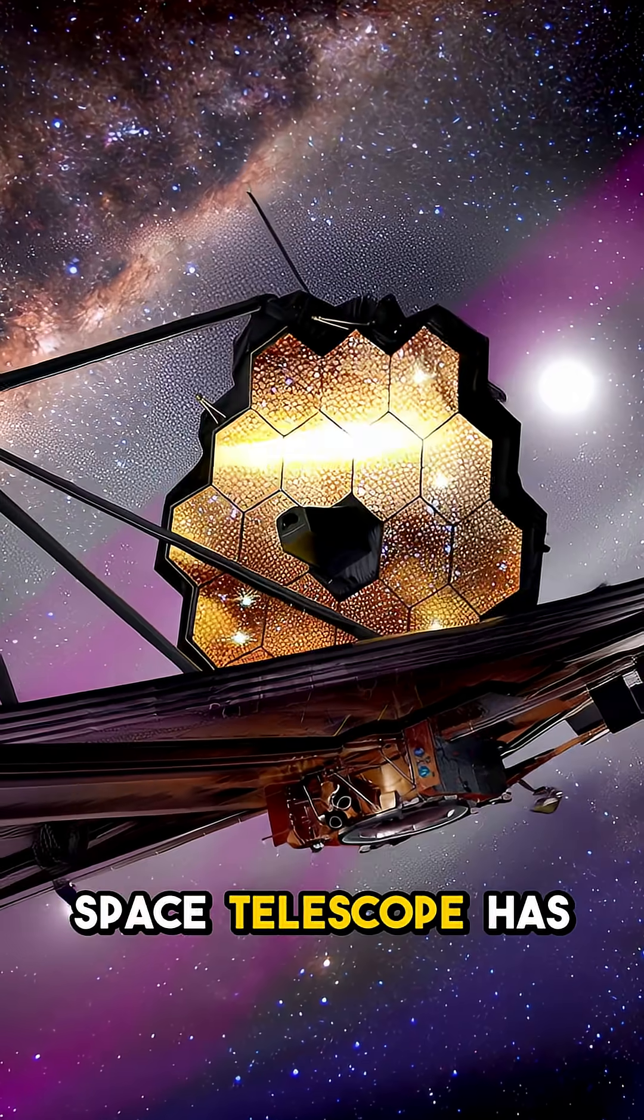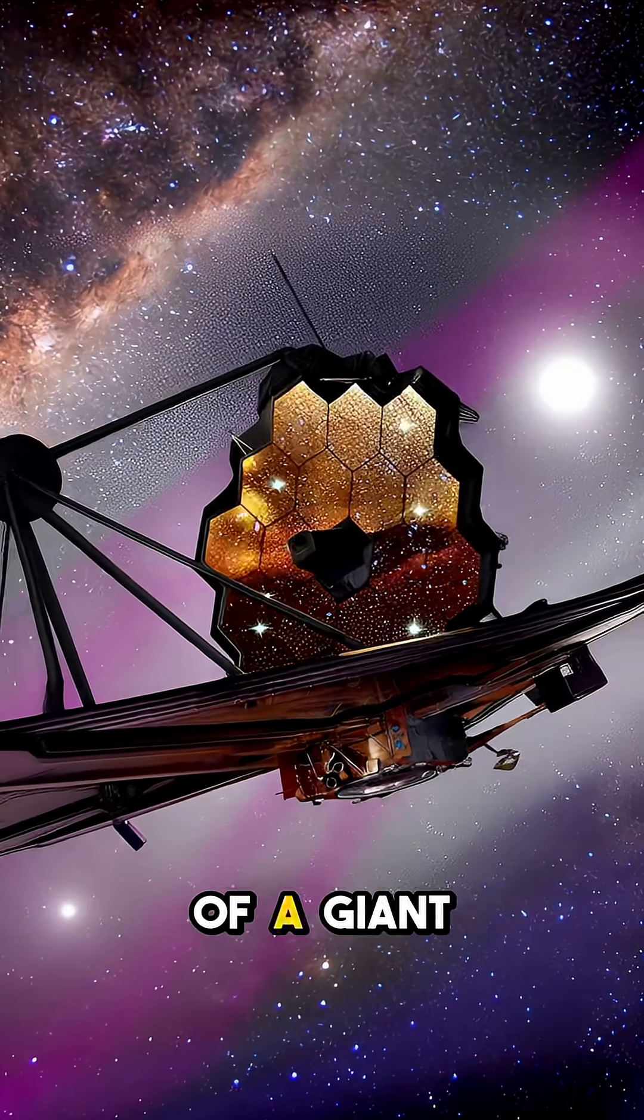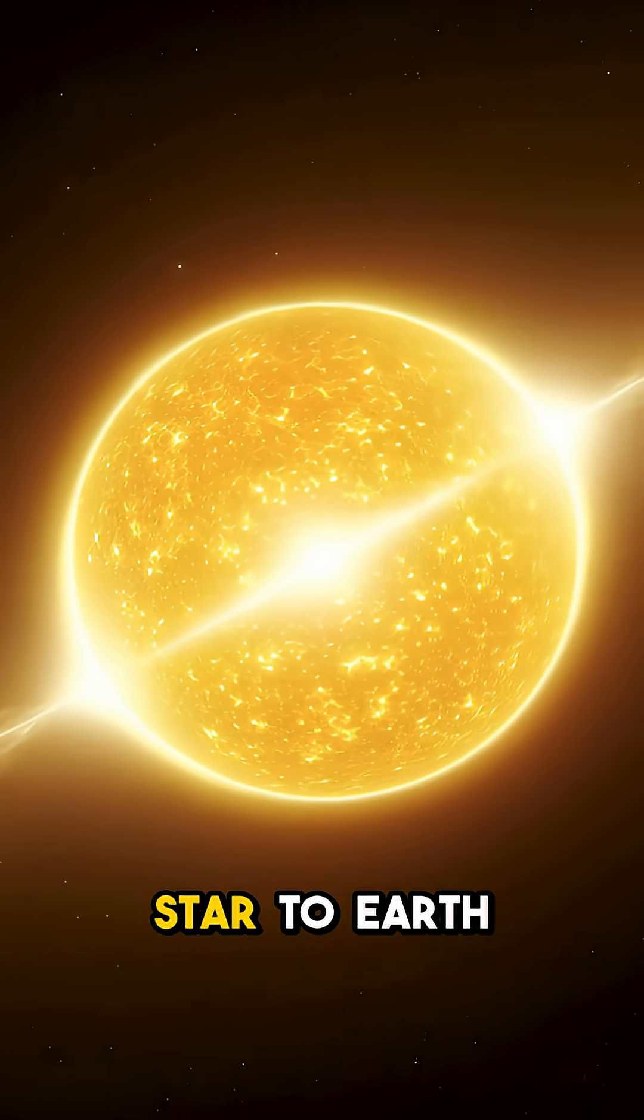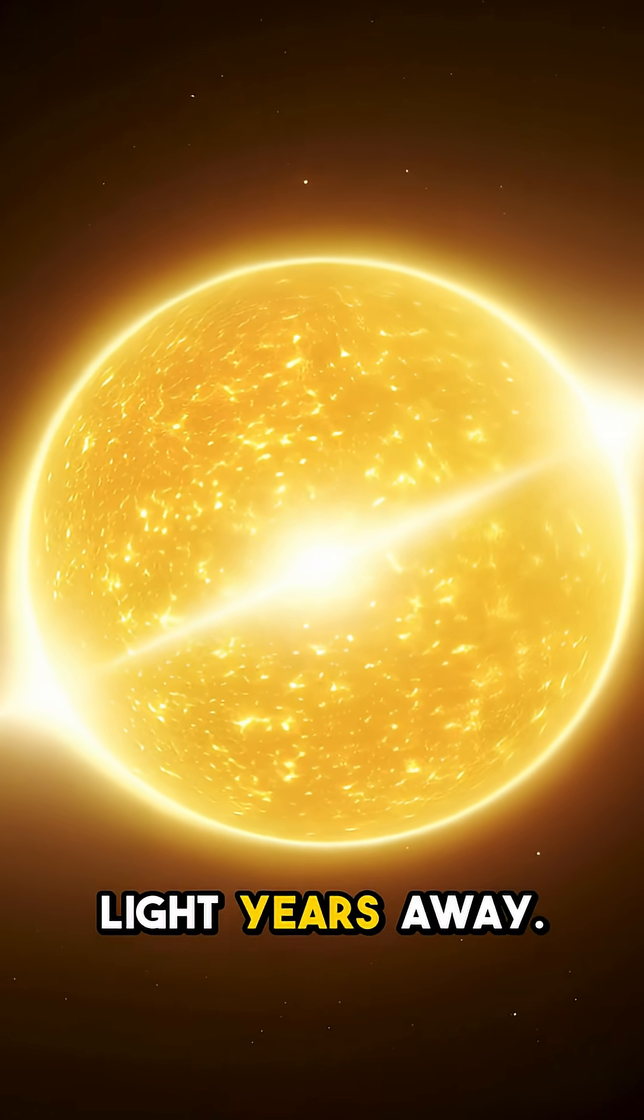NASA's James Webb Space Telescope has discovered strong evidence of a giant planet orbiting Alpha Centauri A, the closest Sun-like star to Earth, at just four light-years away.